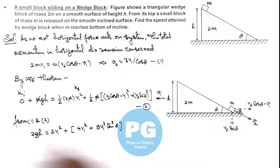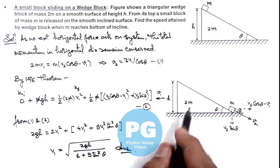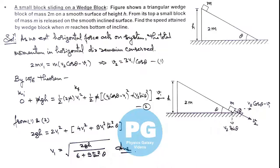And further on solving we'll get the value of v1 which is equal to root of 2gh divided by 6 plus 9 tan square theta. That is the result of this problem, the speed attained by the wedge block when a small block reaches the bottom of incline.